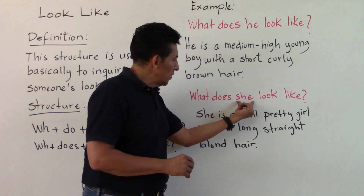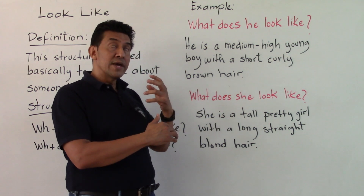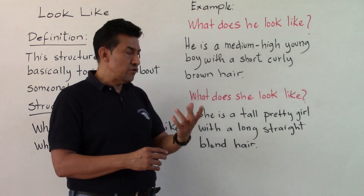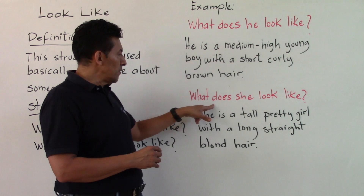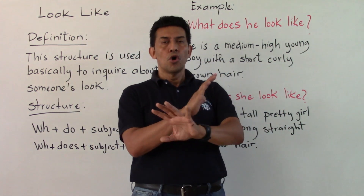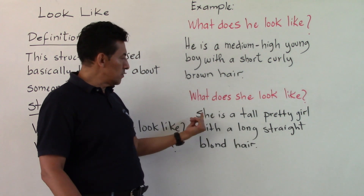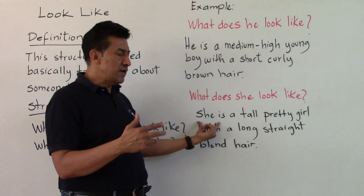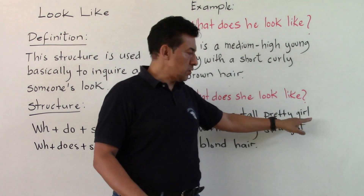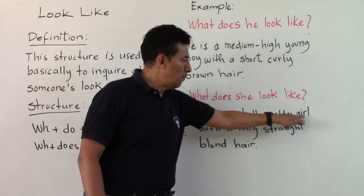When we use 'she,' we refer to a woman or a girl. I can ask: 'Hey, what does she look like?' because someone is talking about a person and, as I said at the beginning, we have no idea who she is. So we ask: 'What does she look like?' And we begin describing: 'Oh, she is a tall pretty girl.'